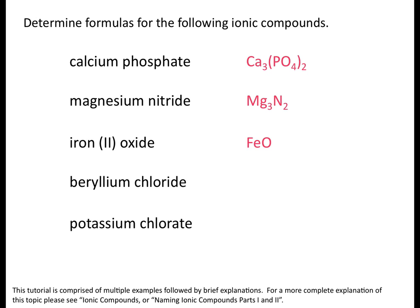Fourth example: beryllium chloride. Beryllium forms ions with a charge of plus two. Chloride is not a polyatomic ion, so chlorine forms ions with a charge of minus one, giving the formula BeCl2. And potassium chlorate — notice the difference between chloride and chlorate. Chloride is the chlorine ion, chlorate is a polyatomic ion. Potassium forms ions with a charge of plus one; chlorate is ClO3 with a charge of minus one, so the formula is KClO3.